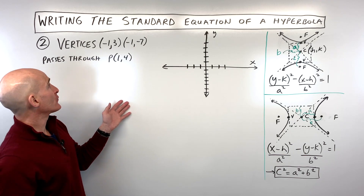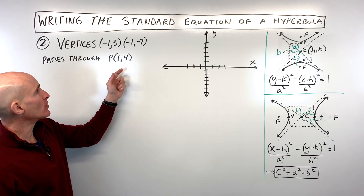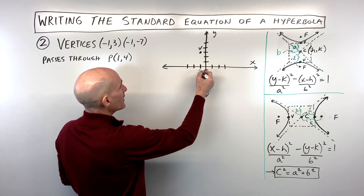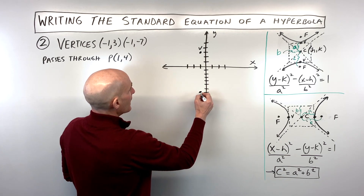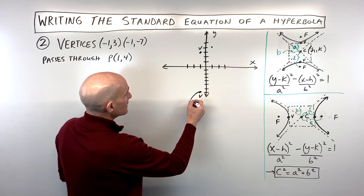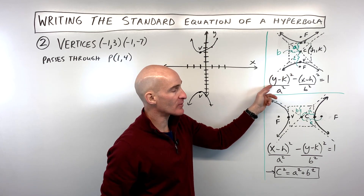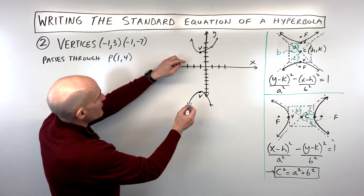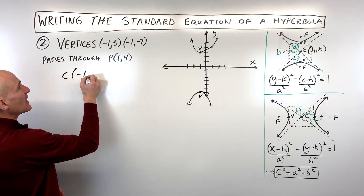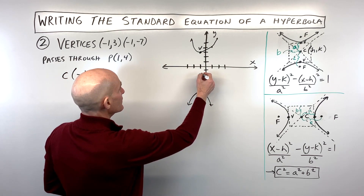Example two is a little different — we're given the vertices and a point the hyperbola passes through. Drawing a sketch: one vertex is at (-1, 3) and the other is at (-1, -7), and the point it passes through is (1, 4). The graph opens up and down — the vertical direction — which means the y-squared term comes first. The center is halfway between the vertices: x = -1, y = (-7+3)/2 = -2, so the center is at (-1, -2).